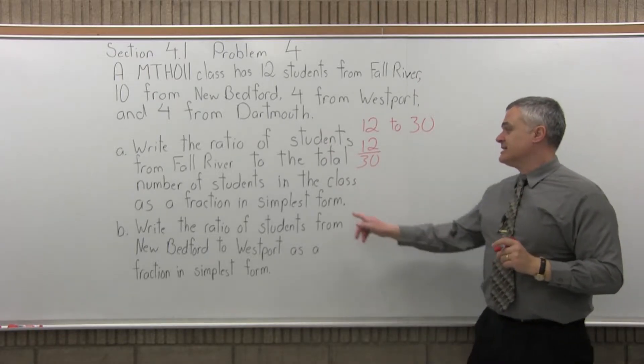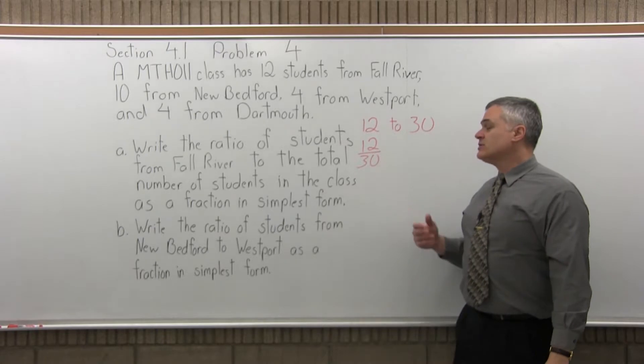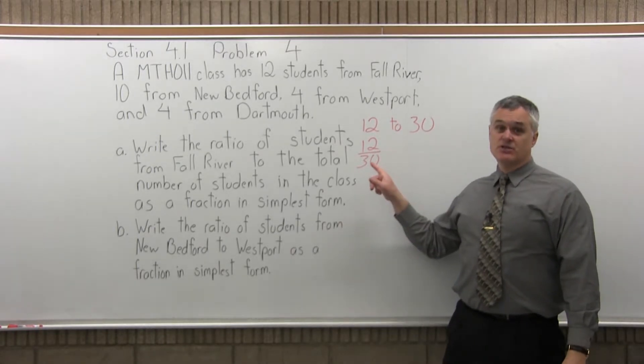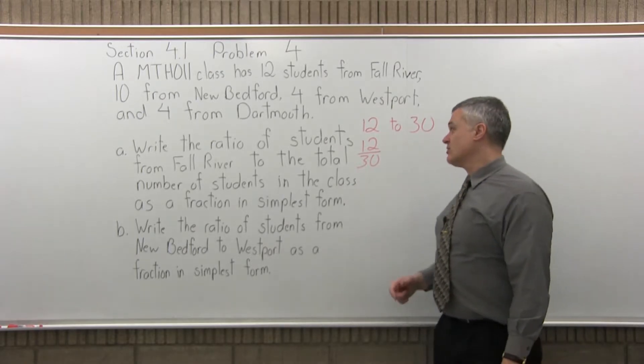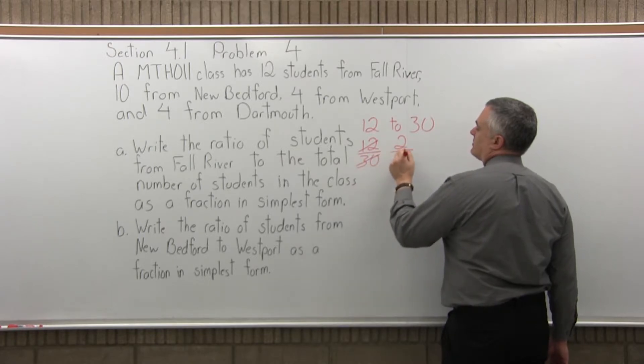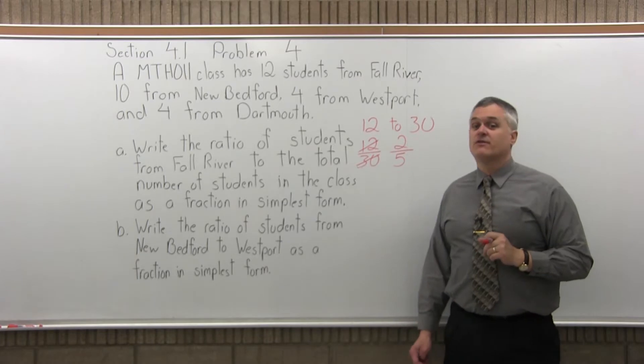Now the question does say in simplest form, so I can reduce that 12 over 30. You can reduce by a few things, but your best bet is going to be 6. 6 divides into 12 evenly and it also divides into 30 evenly. So 6 will divide into 12 two times, and 6 will divide into 30 five times. So 2 over 5 is the final answer for part A.